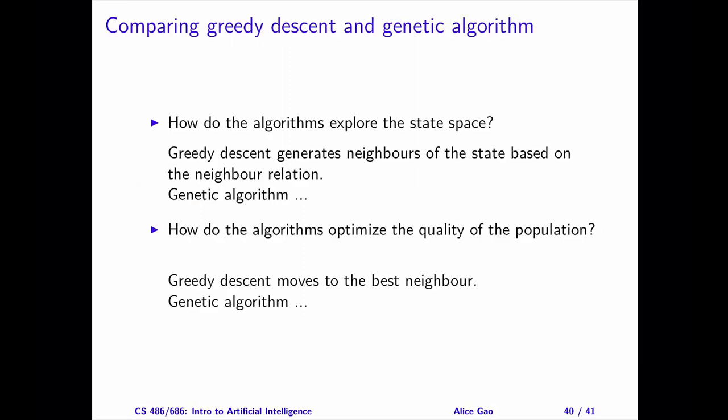I have discussed a few different local search algorithms so far. At the surface, some of them appear quite different — for example, you might think that greedy descent is quite different from the genetic algorithm. But are they really that different? Let's do a quick comparison. Recall that many local search algorithms try to trade off exploration and exploitation. Consider greedy descent and the genetic algorithm: how does each algorithm explore the search space, and how does each algorithm optimize the quality of the population? Pause the video and come up with your answers, then keep watching.